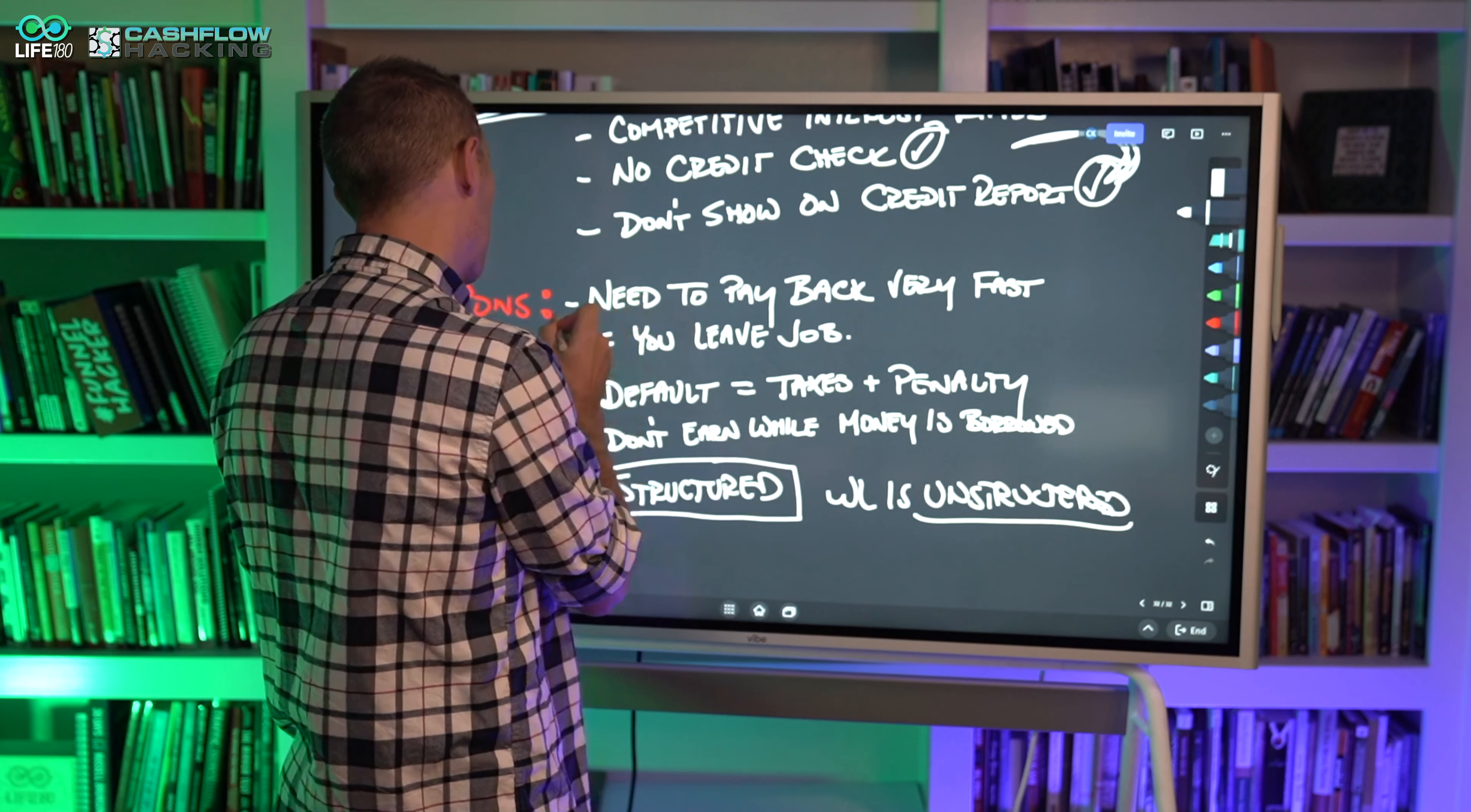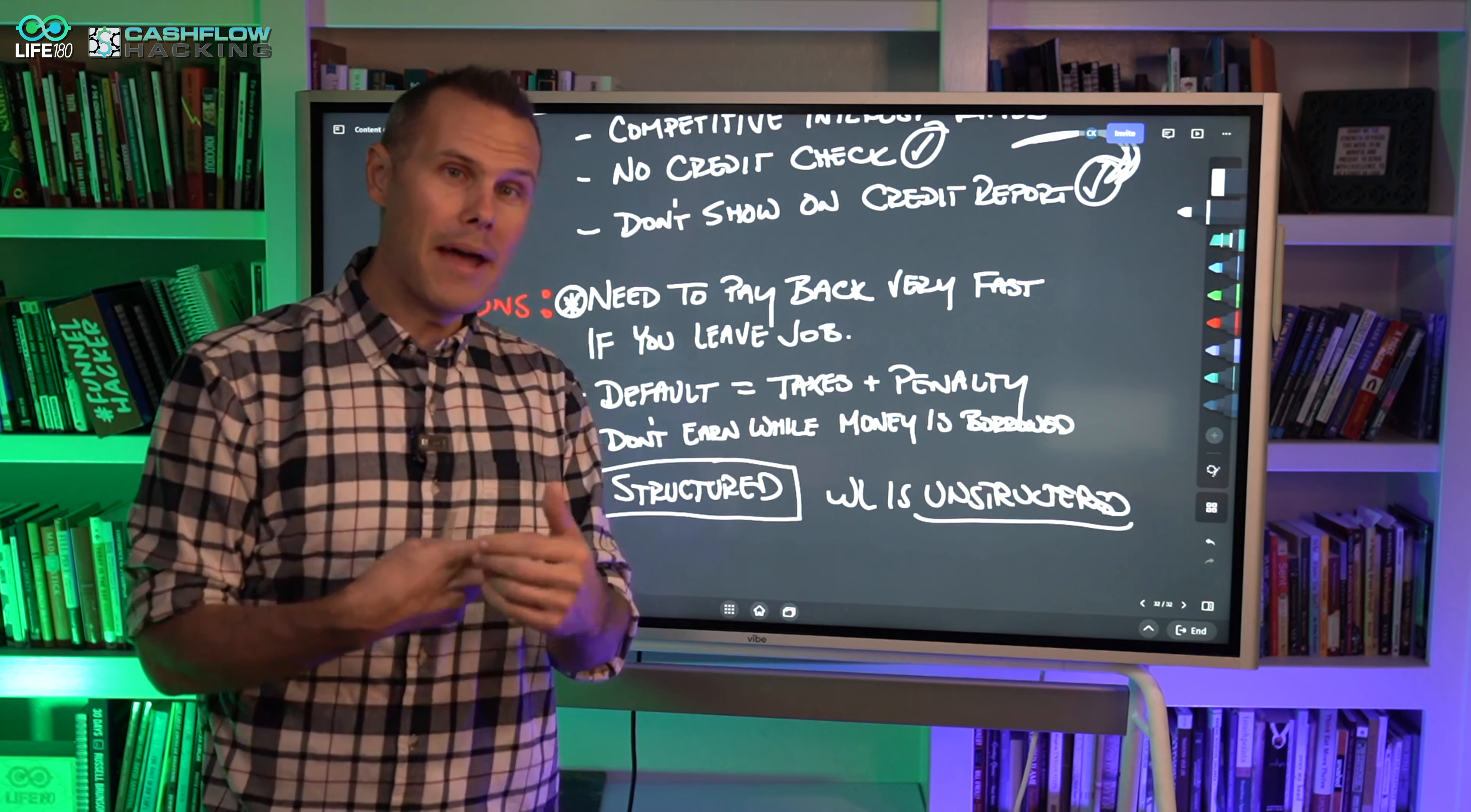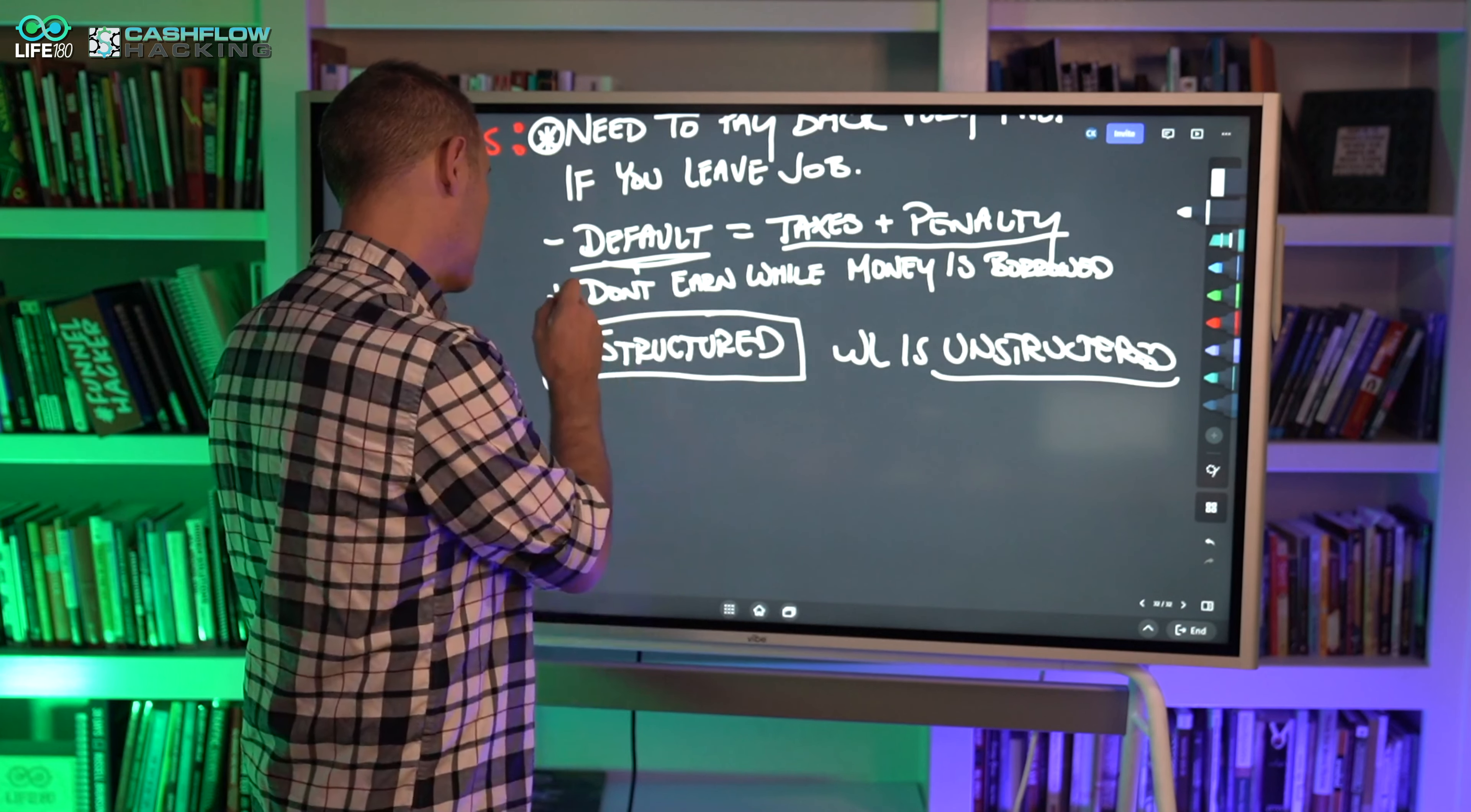Whole life insurance is unstructured versus structured. Now, the cons of 401k - you need to pay it very fast if you leave a job. If you have a 401k loan outstanding and you lose your job or leave your job proactively, maybe for another job opportunity, one of the negative parts is it becomes a little bit like golden handcuffs. If you leave, you have to pay this loan back fast. If you don't pay it back fast within a certain timeframe, then you would be subject to a default on the loan, which would equal taxes and penalty that would need to be paid.